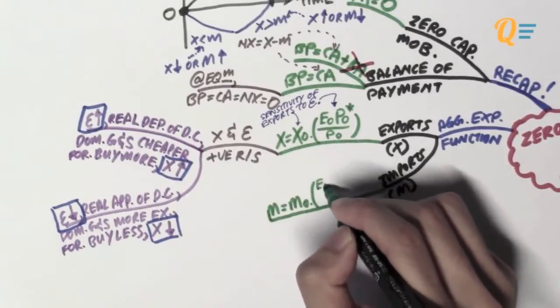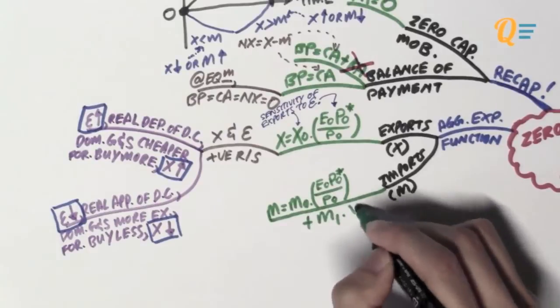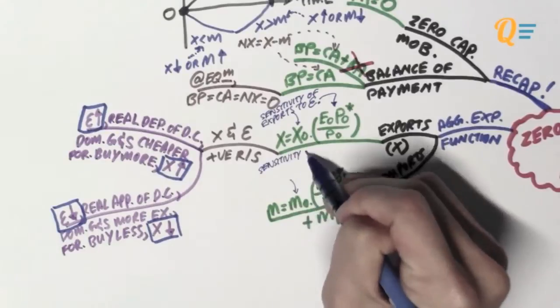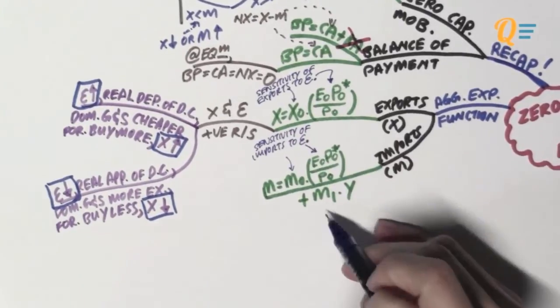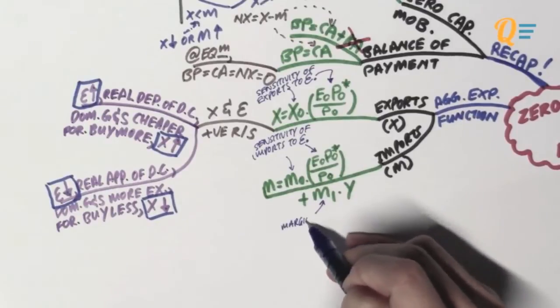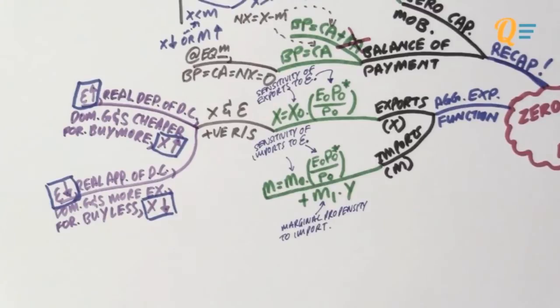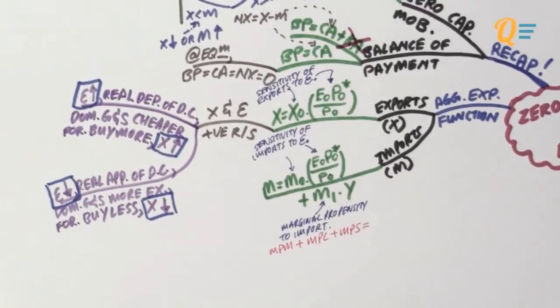Moving on to imports. So this is what the imports function would look like. So you got M₀ multiplied by the real exchange rate plus M₁ times Y. So M₀ over here is also a sensitivity of imports to the real exchange rate and M₁ over here refers to your marginal propensity to import. I think you have guessed that by now.